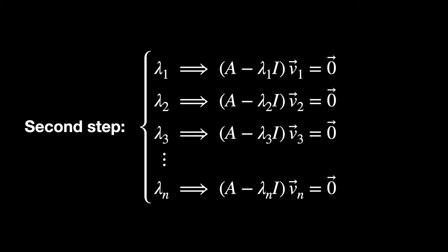The first step is to solve the characteristic equation, and thus find the eigenvalues lambda. The second step, for each eigenvalue lambda, solve the linear system of equations, to find the eigenvectors V of the matrix A.